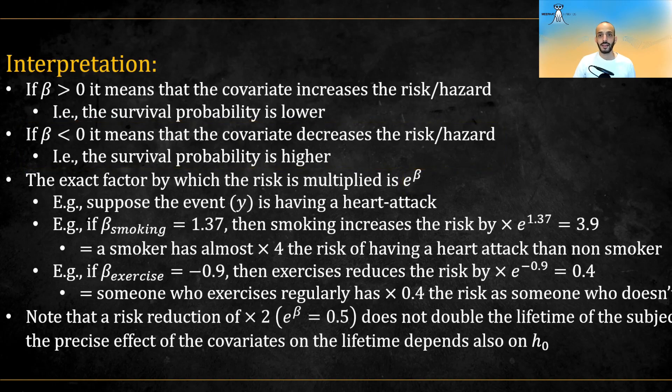For example, suppose we have an event being experiencing a heart attack. If the beta of smoking is 1.37, then smoking increases the risk of a heart attack by e to the power of 1.37, which is equal to 3.9, meaning that a smoker has almost four times the risk of having a heart attack than a non-smoker.